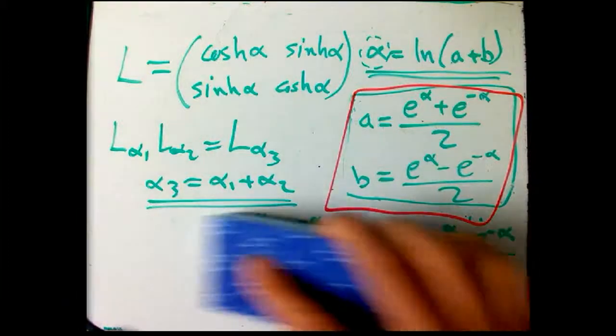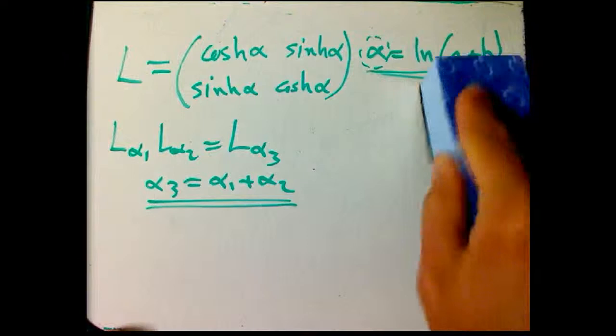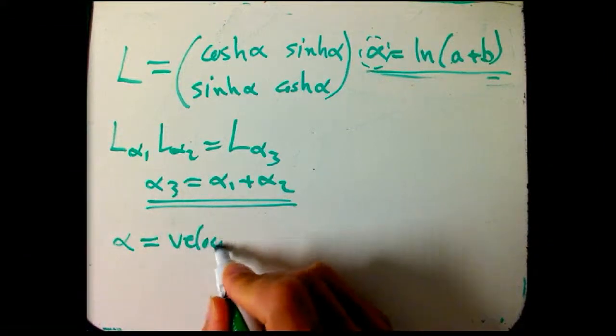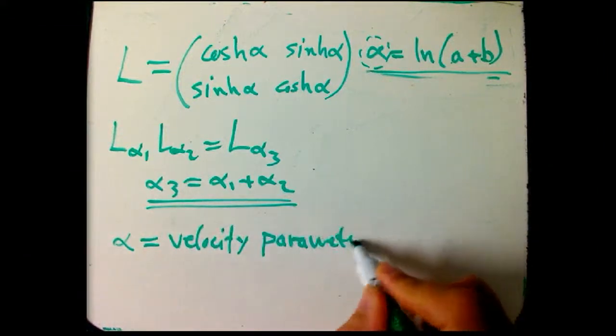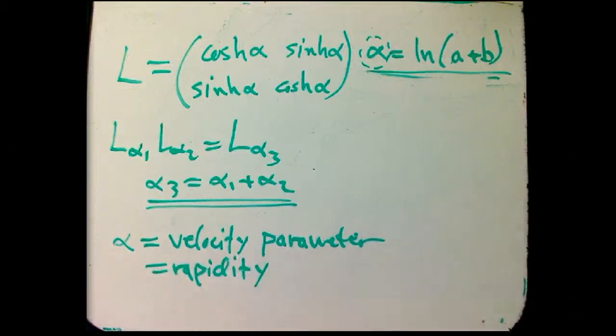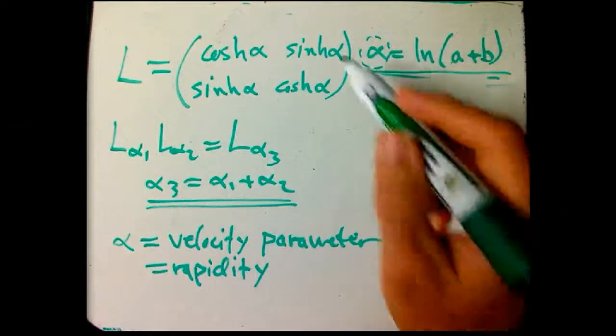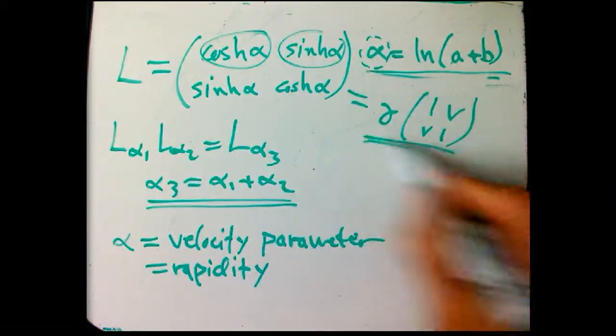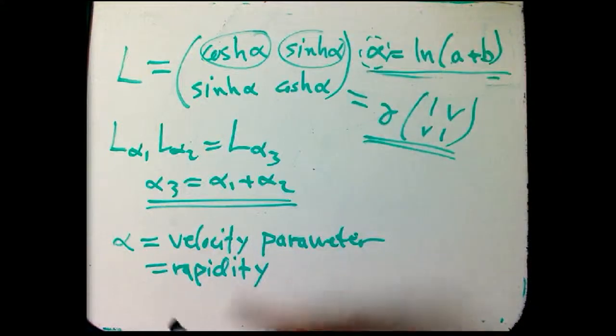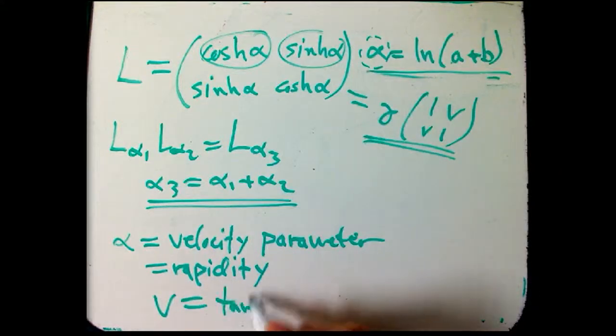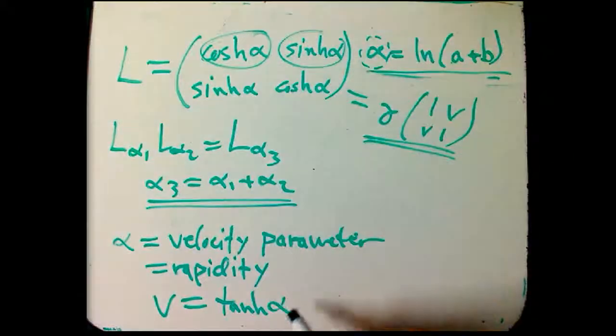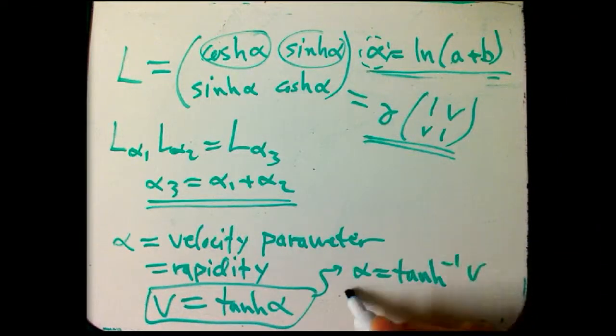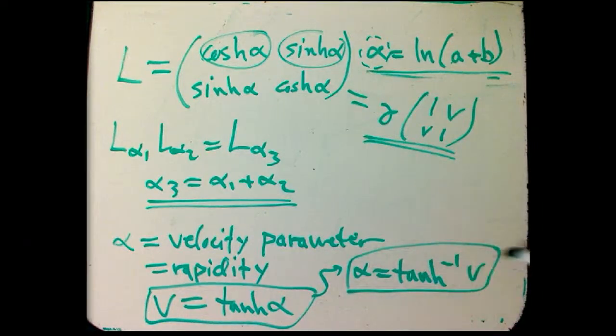So alpha goes by a couple different names. It's often called the velocity parameter, because it has something to do with velocity, and we'll see exactly what it is in a second. Alpha is not the honest-to-God usual notion of velocity, but you can call it a velocity parameter. And it's sometimes called the rapidity, because that's just a synonym for velocity roughly. And what is it in terms of V? Well, that's easy. Remember how you got V from a Lorentz transformation. You took this and divided by this. So the ratio of this over this is still V. And so what we get is that the velocity is the tanh, the ratio of sinh over cosh of alpha.